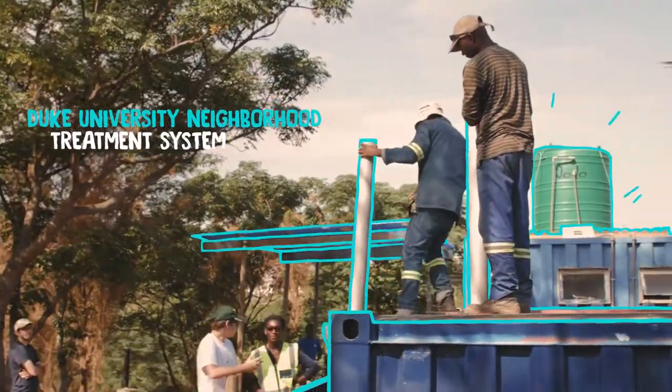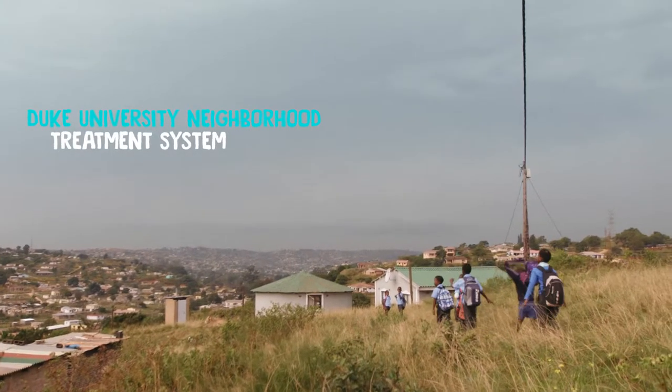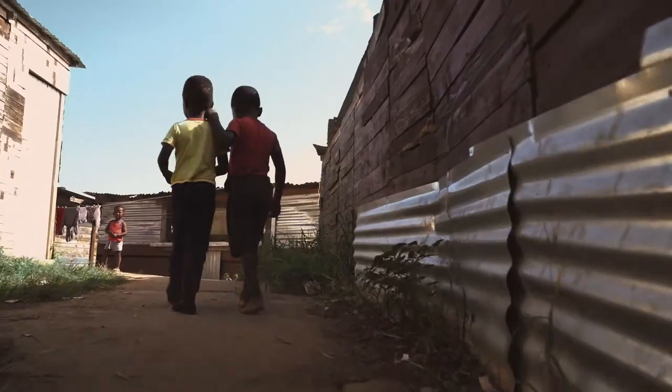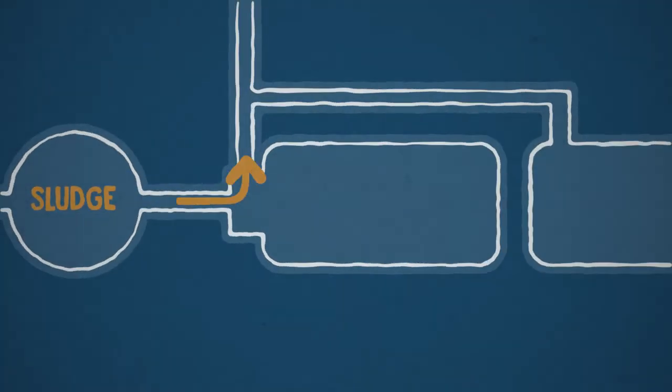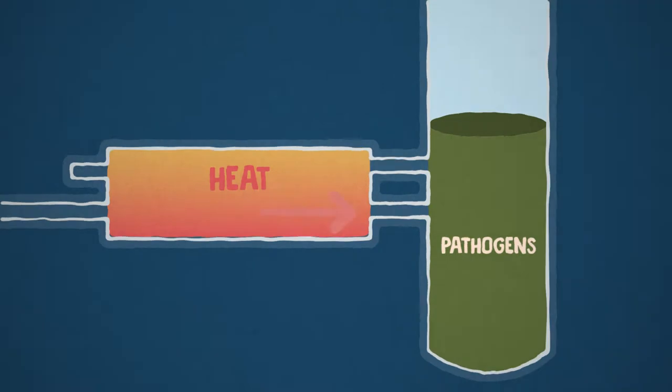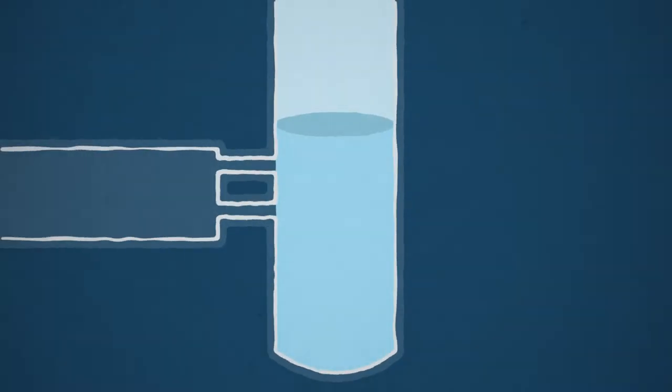Duke University's Neighborhood Treatment System is designed for a community of about 1,200 people. It mixes fecal sludge and oxygen under high pressure and heat which breaks down the harmful pathogens and creates water, nitrogen, and ash.